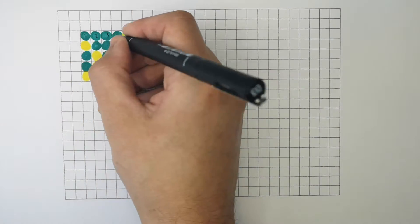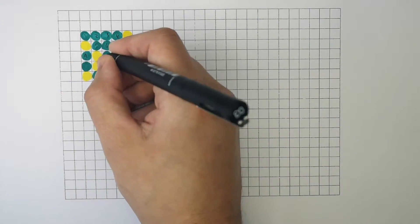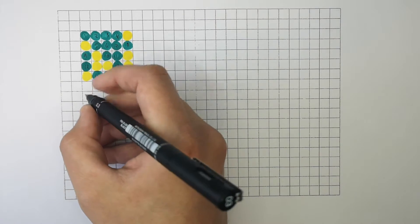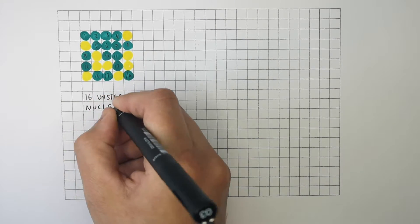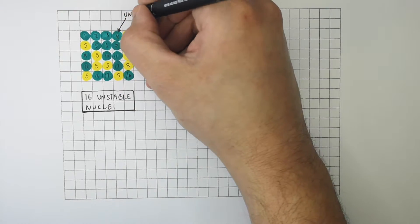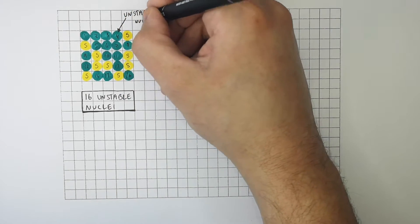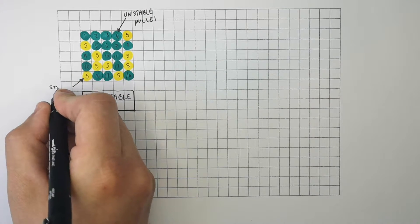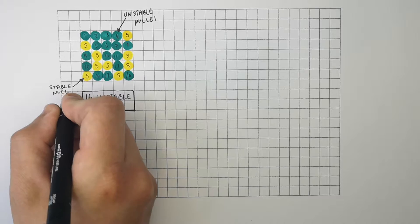There are 16 unstable nuclei in this radioactive sample. The green-coloured nuclei represent unstable nuclei that have yet to decay, and the yellow nuclei represent stable decayed nuclei.